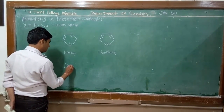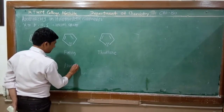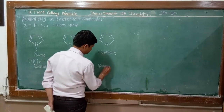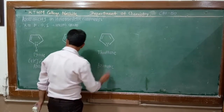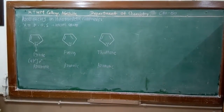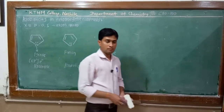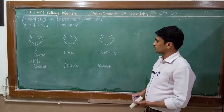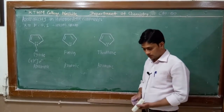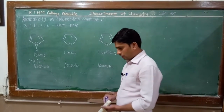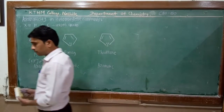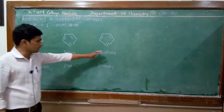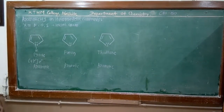Furan is also an aromatic compound and thiophene is also an aromatic compound. We can apply the Hückel rule: these are planar, cyclic, conjugated compounds containing 6 pi electrons. All the criteria of the Hückel rule are fulfilled by these heterocyclic compounds. Therefore pyrrole, furan, and thiophene are aromatic compounds.